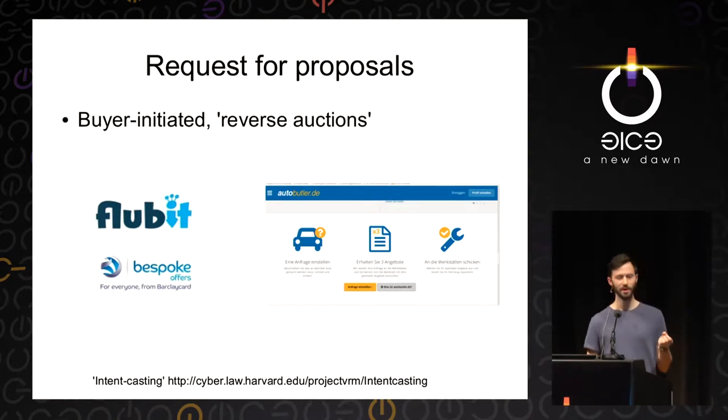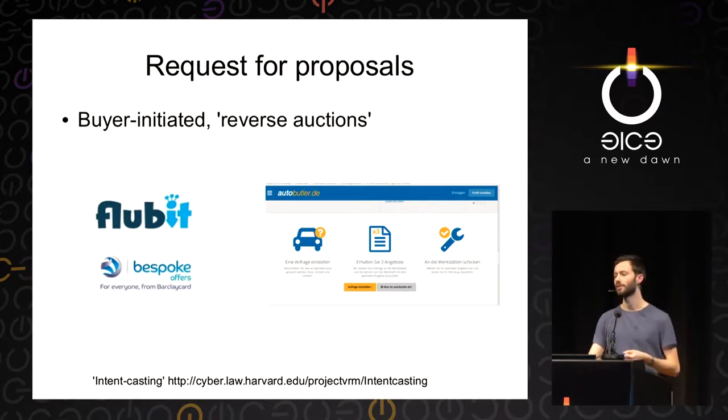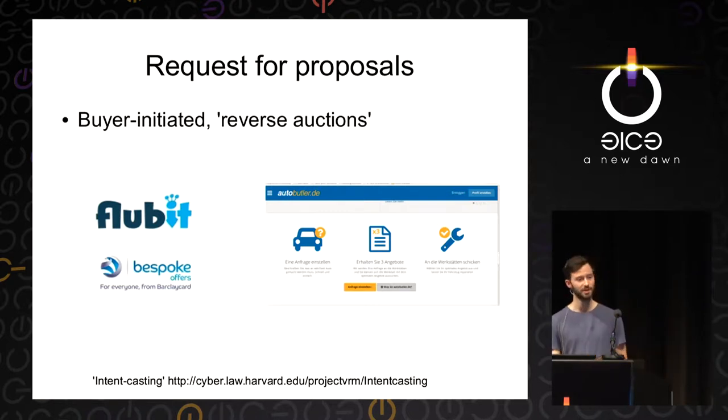This kind of infrastructure could work for individuals too. There's a service called Flubit where you find something online you want to buy but don't like the price — you copy the URL, paste it into the service, and within a few hours you get back offers from companies competing to provide that product at a cheaper price. Doc Searles from Harvard University's project VRM — Vendor Relationship Management — calls this intent casting: rather than consumers responding to marketer messages, it's marketers and suppliers responding to the intentions broadcast by individuals.